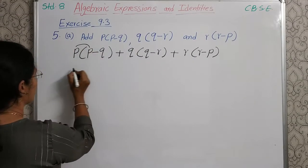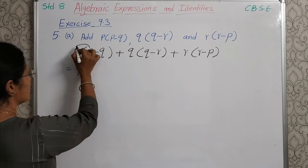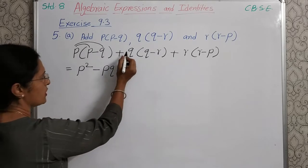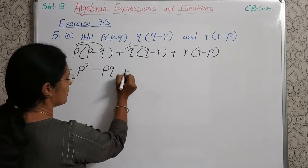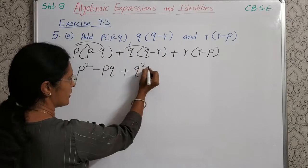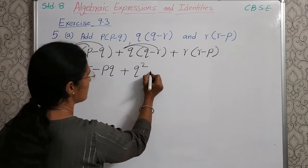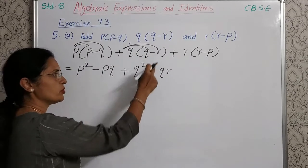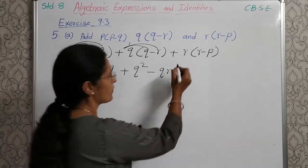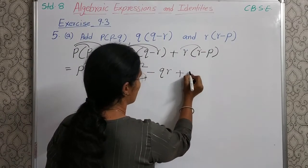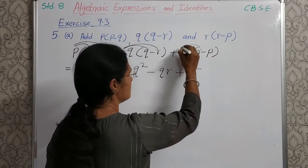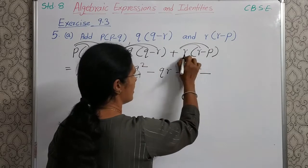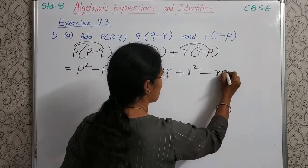Here P into P is P square. Then P into minus Q is minus PQ. Next, plus Q into Q is plus Q square. Then plus Q into minus R is minus QR, because plus minus is minus, Q into R is QR. Then plus R into R is plus R square. Then plus R into minus P is minus RP.